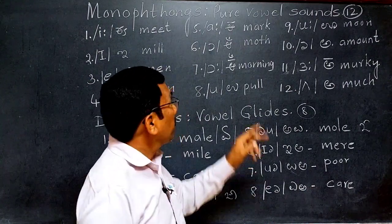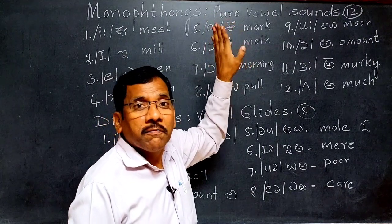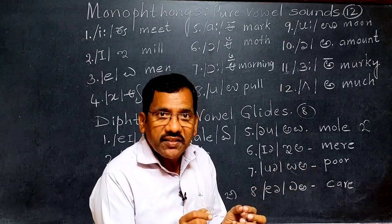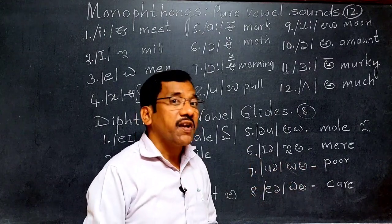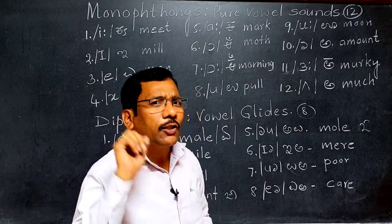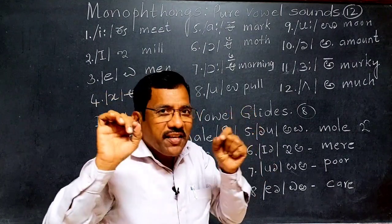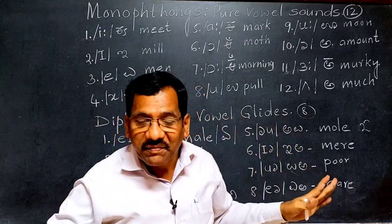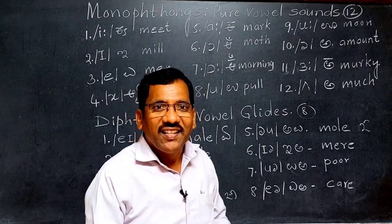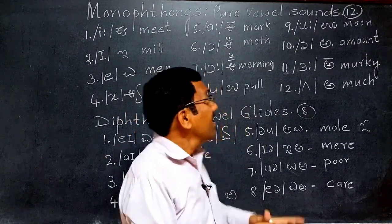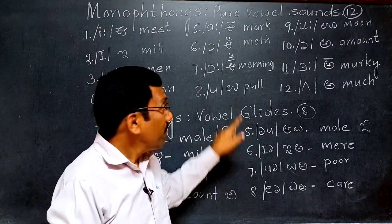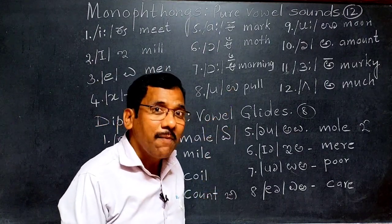Dear friends, there are twelve monophthongs and eight diphthongs. Altogether, in the English language, we have twenty vowel sounds. Please note the difference: these are vowel sounds, not vowel letters. Vowel letters are A, E, I, O, U — only five. But vowel sounds are twenty. Hope that is clear. Please take down these notes.